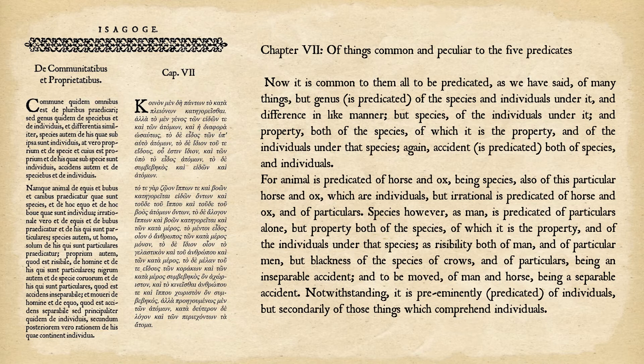He's delineating all the ways in which these things are applied in a categorical hierarchy. Species is predicated of particulars alone — so you would have to identify an individual and say 'this person is a man.' When you're assigning the species to something, you assign it to individuals. It doesn't make sense to assign it to anything above that, because the only thing above that is species itself — it would be like saying 'humans are humans.'